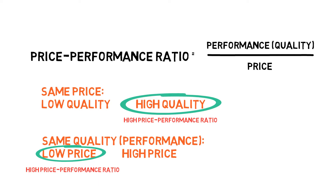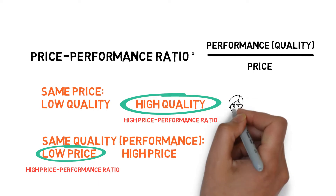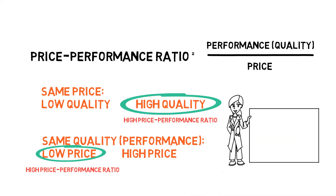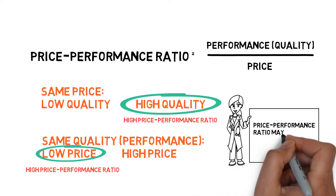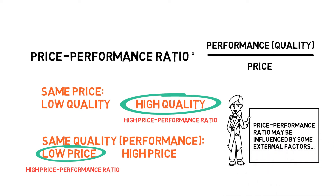Generally, when people are buying items they tend to choose the one with the higher price-performance ratio. However, that ratio might be influenced by some external factors which may also change people's options for a purchase. Let's consider this example.